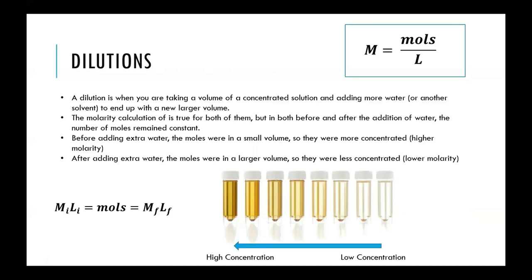When looking at dilutions in chemistry, you use the molarity calculation. Molarity is moles over liter. When you do a dilution, you start out with a high concentration, take some volume of this high concentration, and add more water or solvent to dilute that amount. The total number of moles does not change, just the volume. But because the volume changed, the concentration will also change because that same number of moles are now spread out over a larger volume.